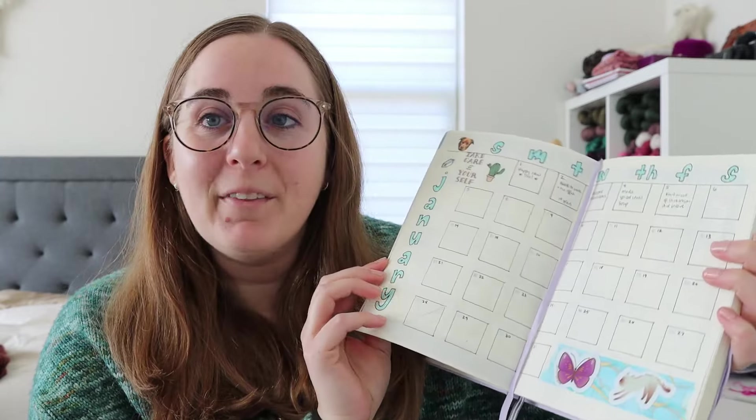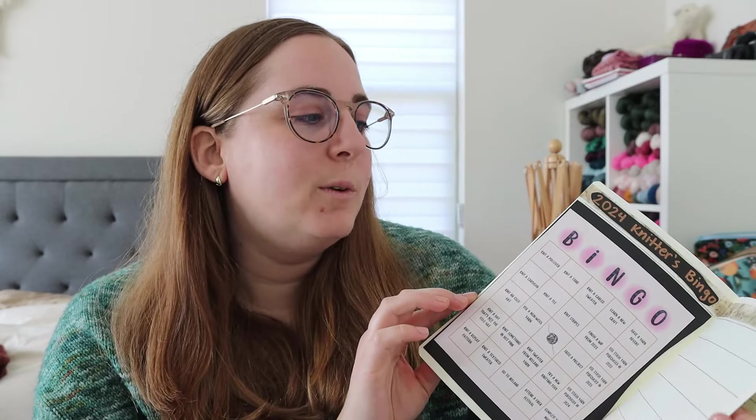I posted a video a couple of weeks ago walking you through how I was setting up my 2024 knitting journal and since then I have fully completed the setup and I have some changes compared to what I originally talked about. I'm going to do a top-down view so you can see all of this. I'm really excited about my sticker page, my project pages, and my monthly pages. So I am going to switch over to the top down view.